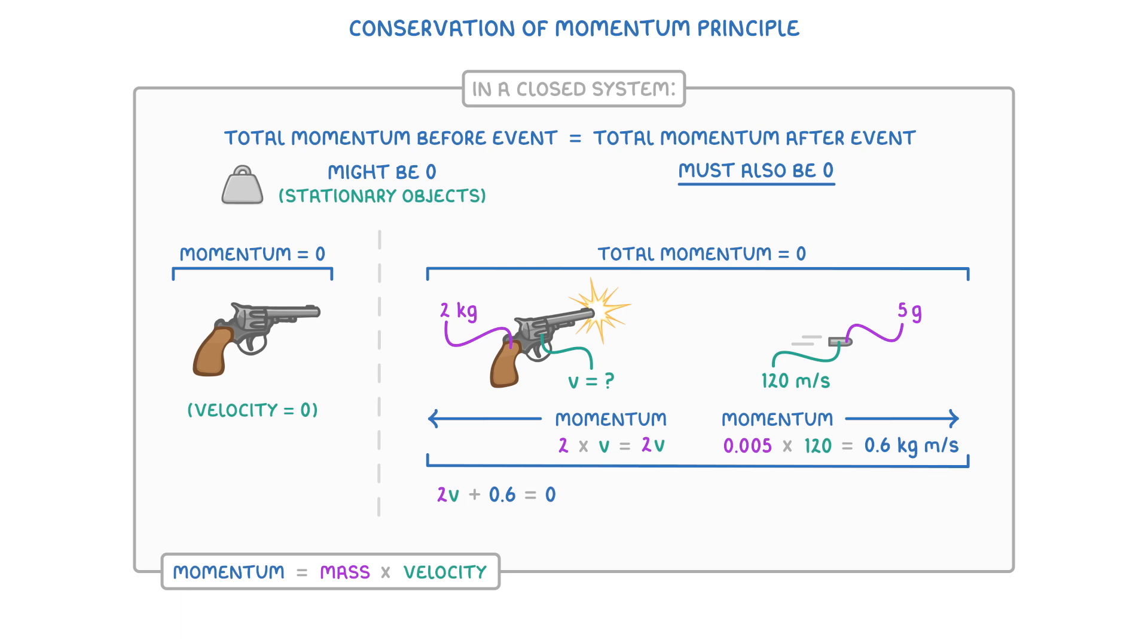And then we can just rearrange this equation to find out the missing value of V. So first, we subtract 0.6 from both sides, giving us 2V equals negative 0.6. And then we divide both sides by 2, leaving us with V equals negative 0.3 meters per second, which is the gun's recoil velocity.